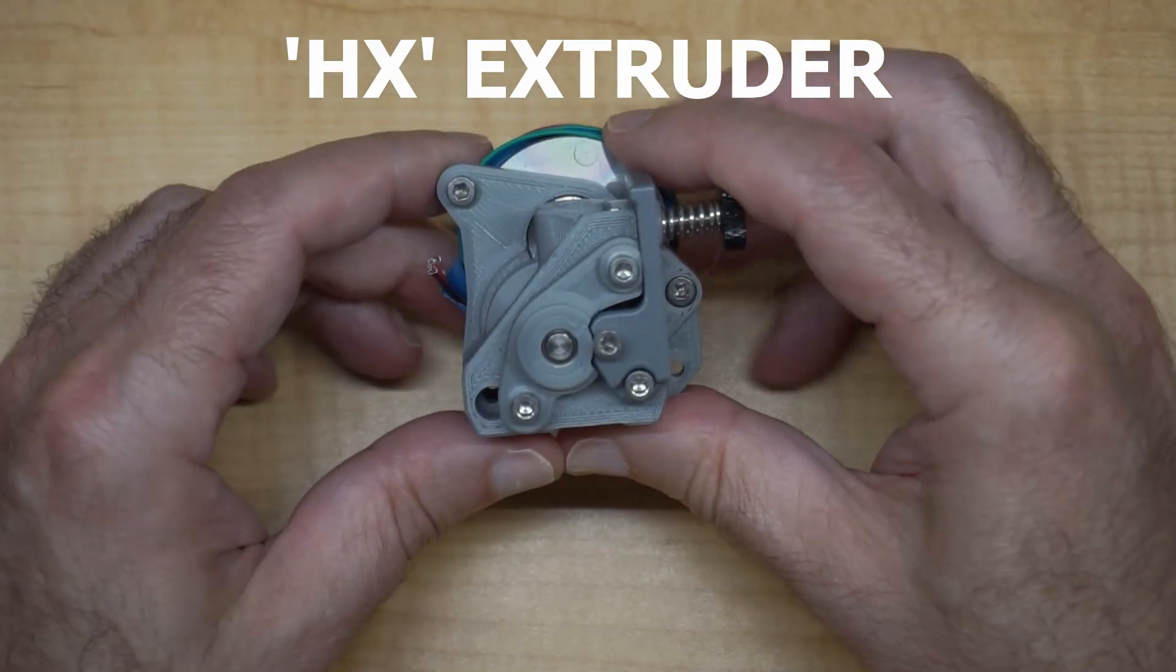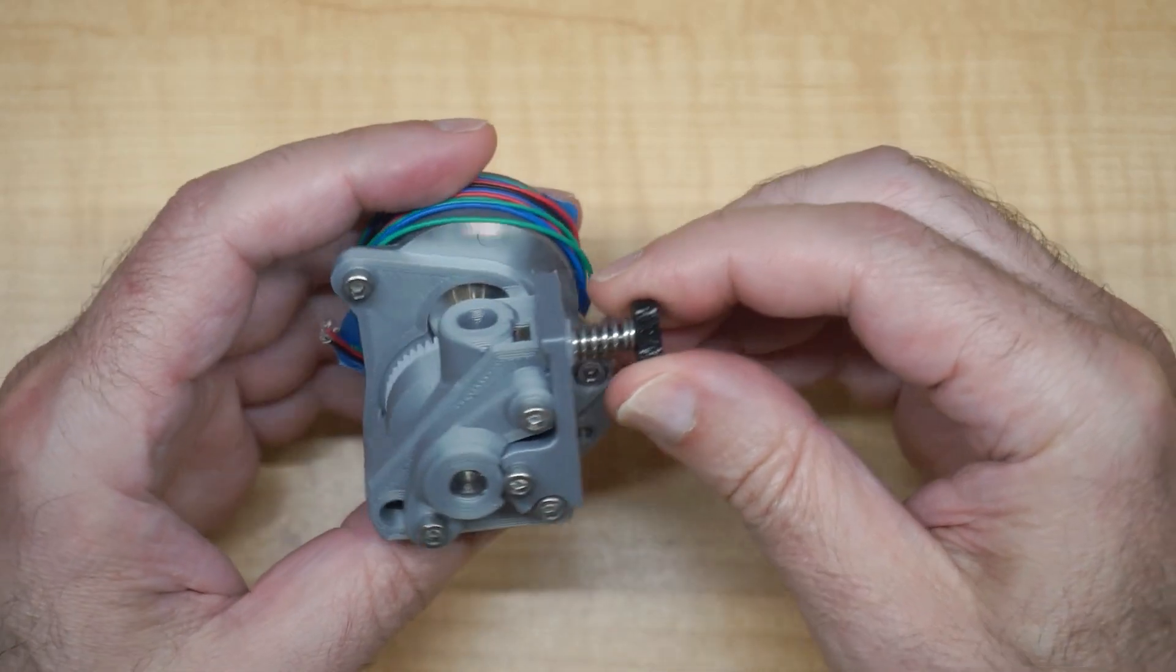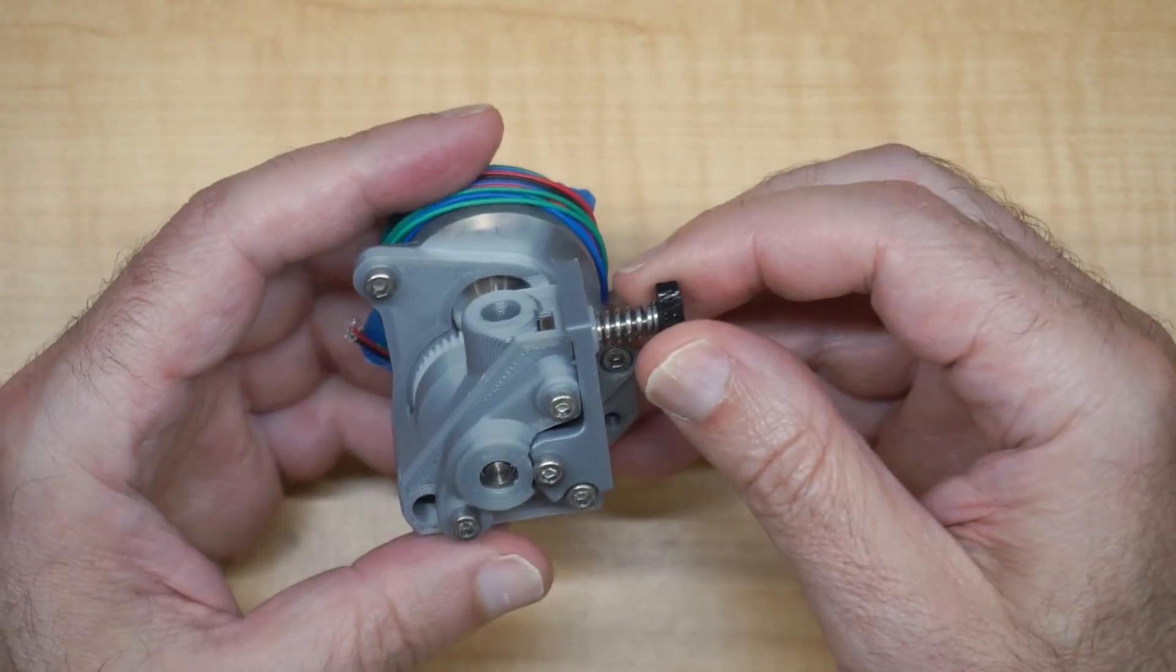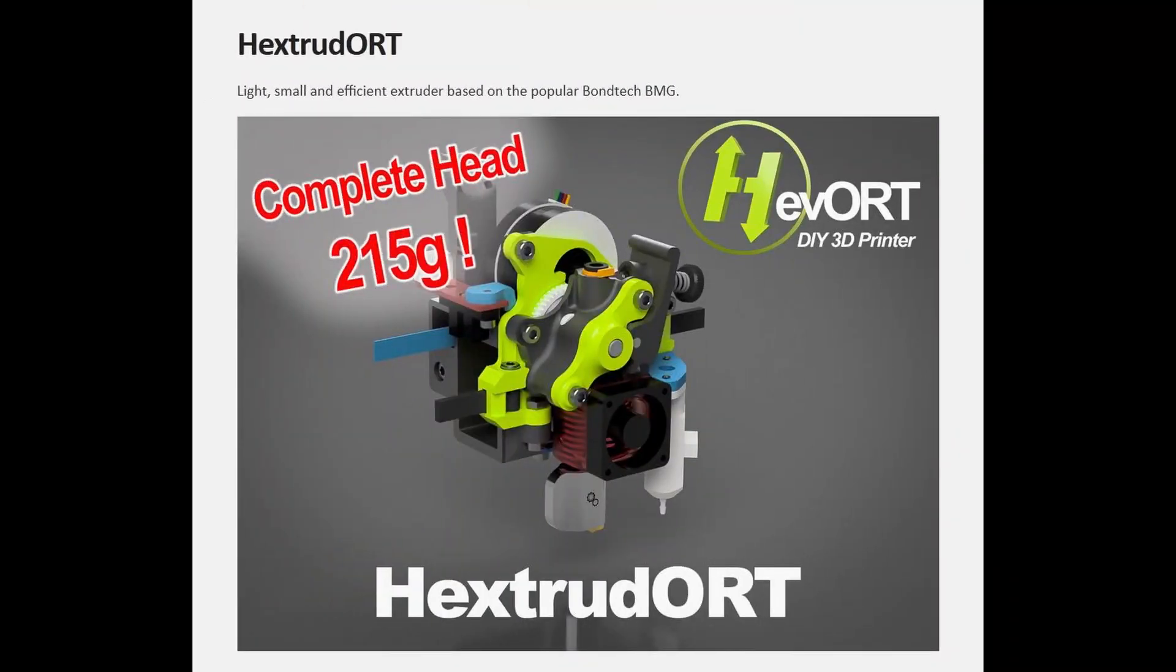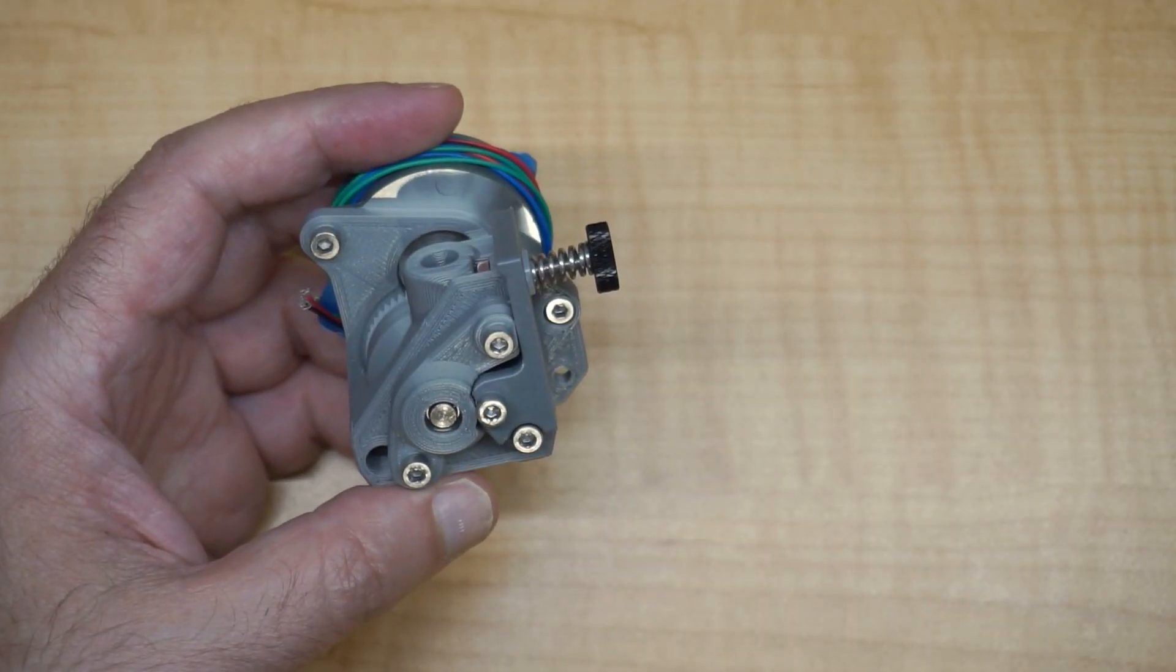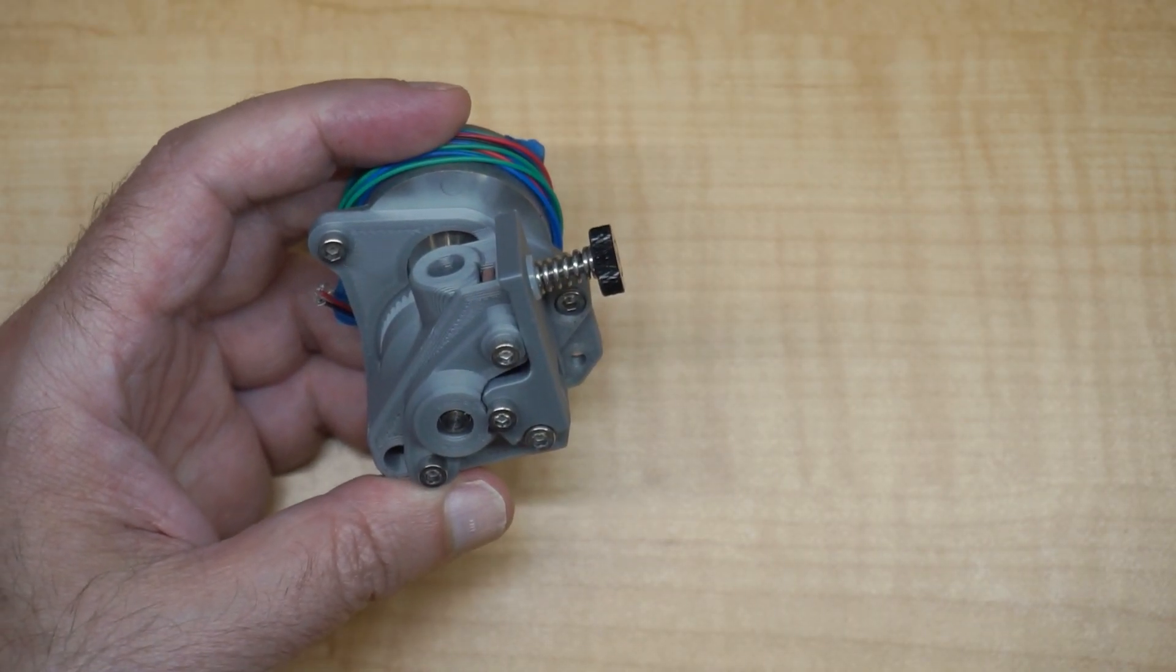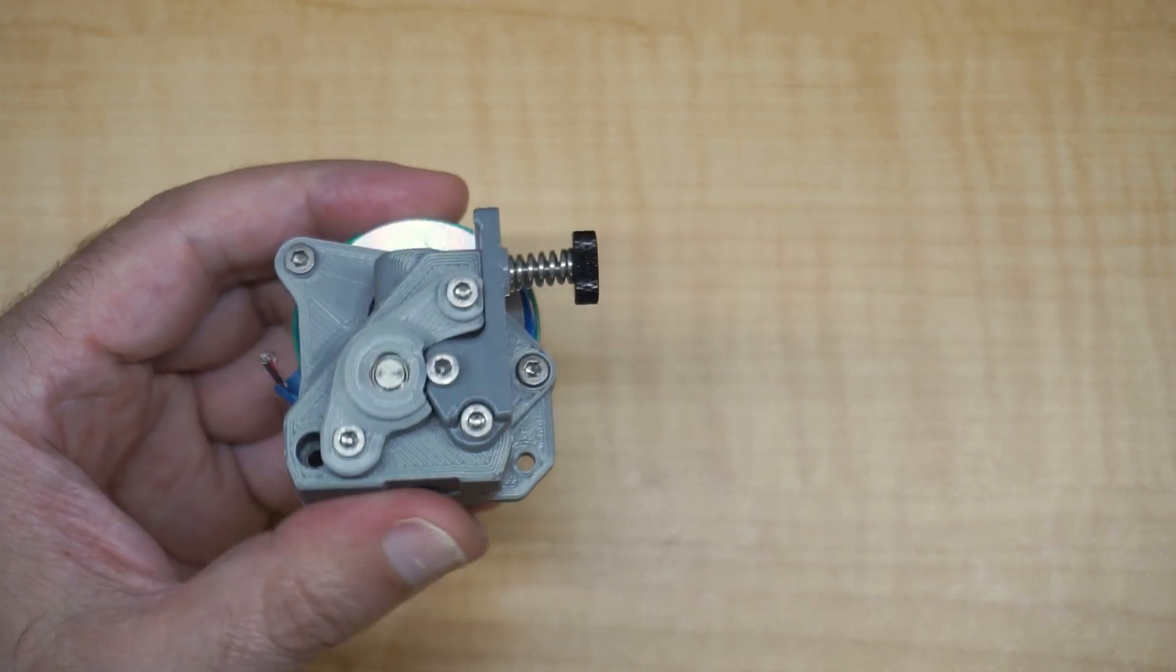So what I'm going to talk about today is this small extruder that I remixed from the Extrudort, which was the Mirage C lightweight extruder. I first saw it on the VZBOT, one of Simon's videos, where he was printing extremely fast with one of these lightweight extruders.